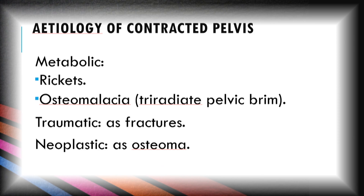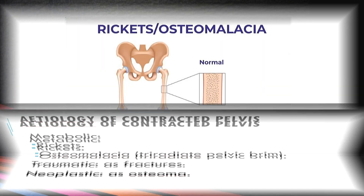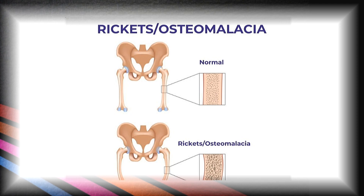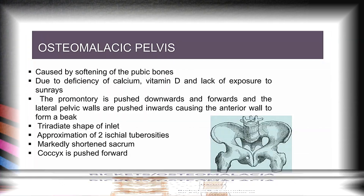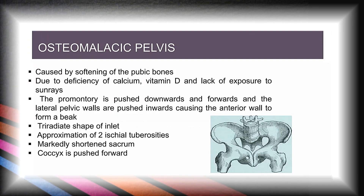The next etiological factors of contracted pelvis are metabolic factors, which include rickets, osteomalacia, traumatic reasons such as fracture, and neoplastic reasons such as osteoma. In osteomalacia pelvis, caused by softening of the pubic bone due to deficiency of calcium, vitamin D, and lack of exposure to sunlight, the promontory is pushed downward and forward and the lateral pelvic walls are pushed inward, causing the anterior wall to form a beak. A triradiate shape of inlet is present, with approximation of the two ischial tuberosities, a shortened sacrum, and the coccyx pushed forward.